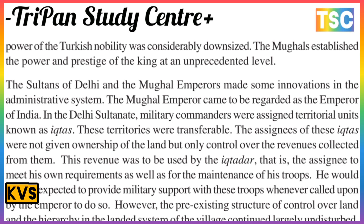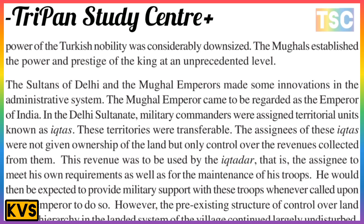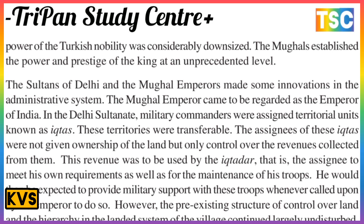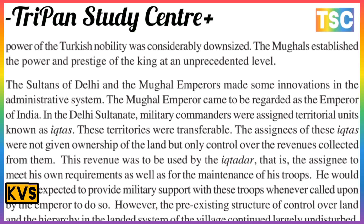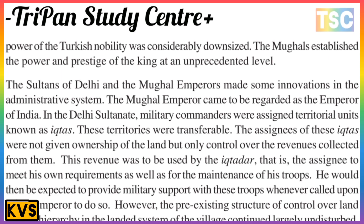The Sultan of Delhi and the Mughal Empire made some innovations in their administrative system. In the Delhi Sultanate, military commanders were assigned territorial units known as iqtas. These territories were transferable and the assignees of an iqta were not given ownership of the land but only control over the revenues collected from them. This revenue was to be used by the iqtadar to meet his own requirements as well as for the maintenance of his troops.